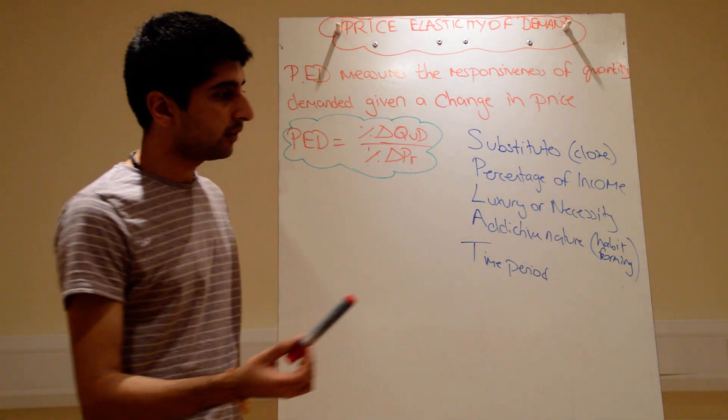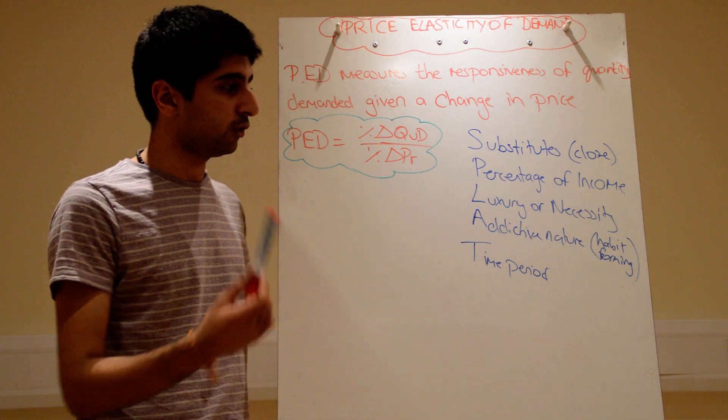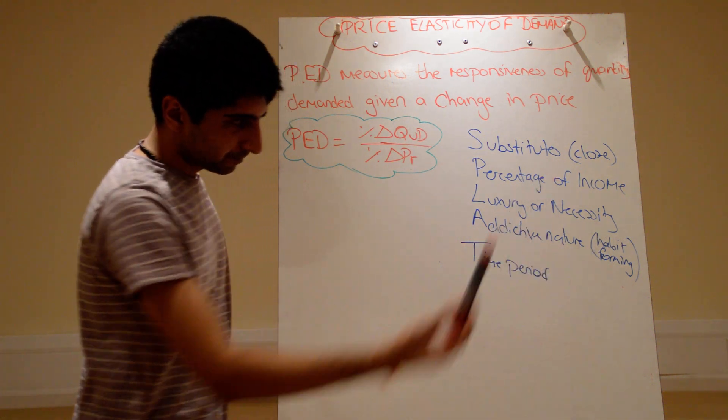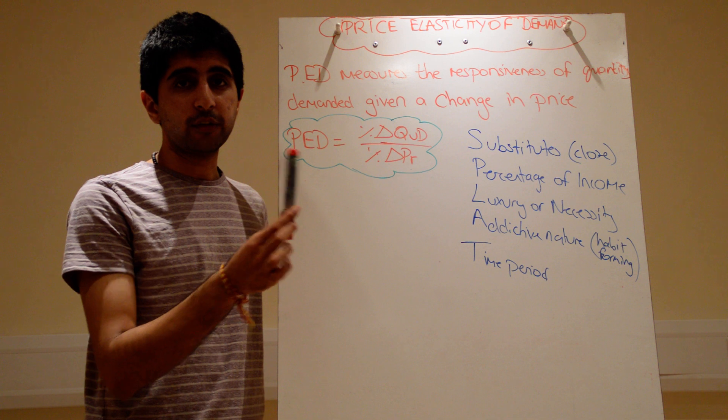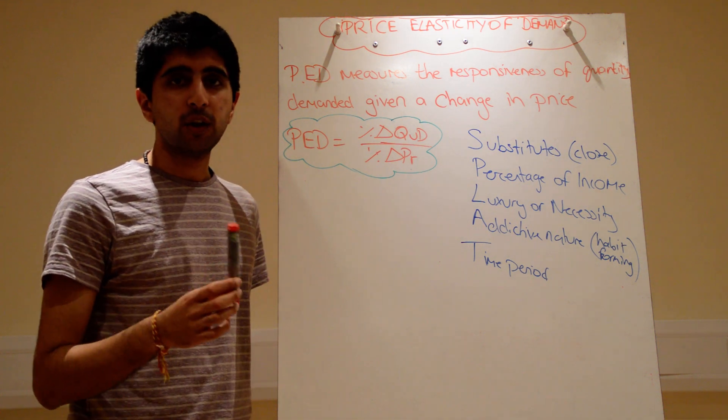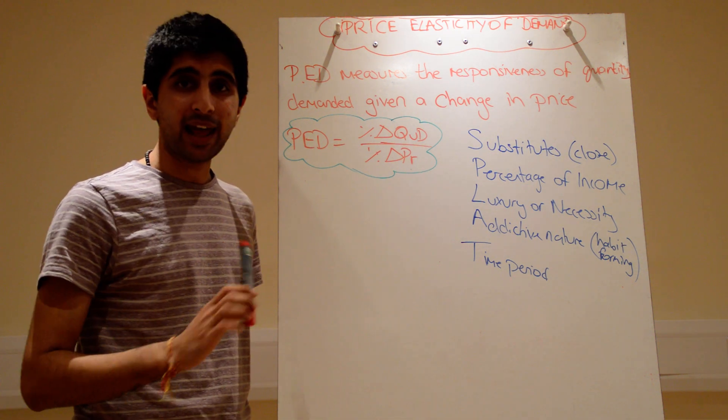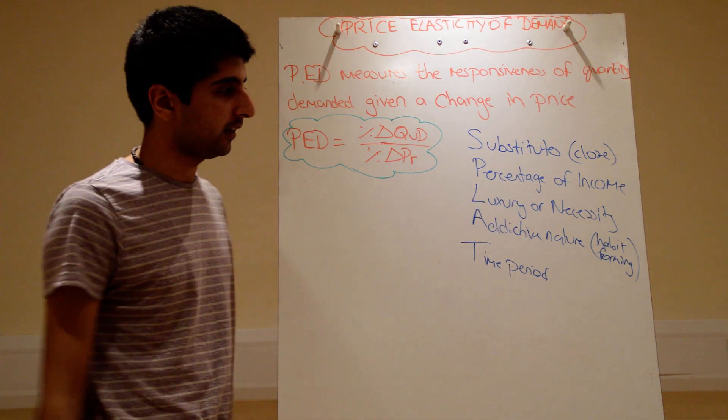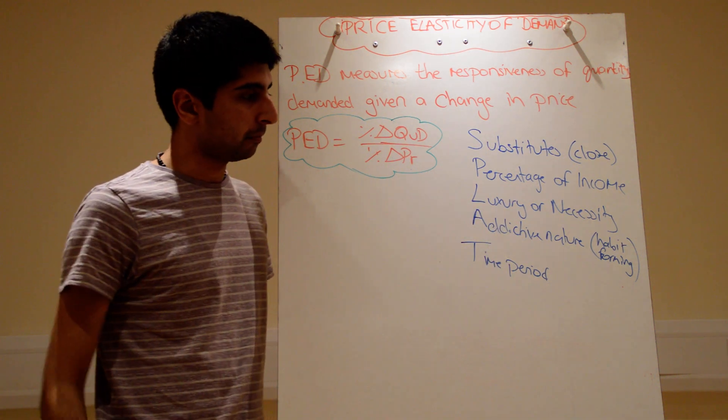Addictive nature. If you have a habit to buy something, if you have an addiction for something, drugs, alcohol, cigarettes maybe, even if the price goes up, your demand will not change very much. You might demand a bit less, but it won't change by a lot. So demand will be very price inelastic for addictive types of goods.